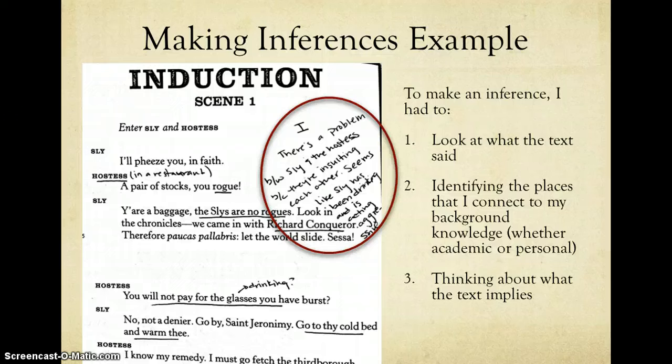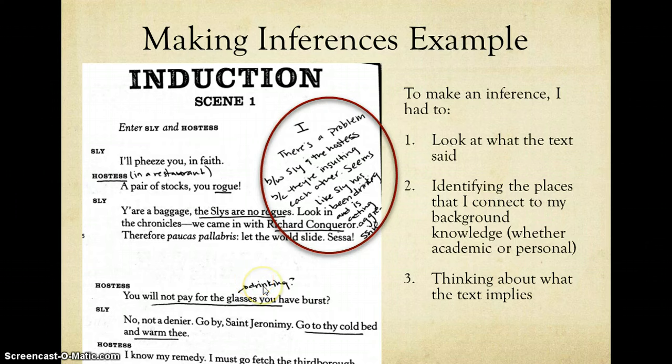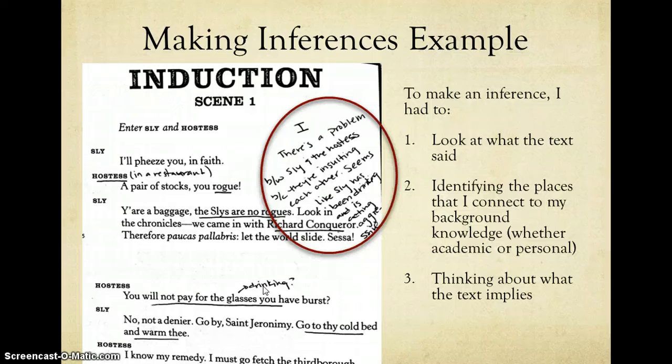And then I also have to think about what the text implies. So the hostess never actually says that Sly's been drinking. That's an inference that I drew, but she does call him out for not paying for the glasses that he burst, which to me leads me to think that maybe he's been drinking. So all of these things led me to draw the conclusion, which you see in my inference annotation.